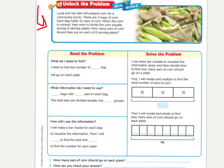It says, Lucy and her dad will prepare corn for a community picnic. There are three bags of corn. Each bag holds 32 ears of corn. When the corn is cooked, they want to divide the corn equally among eight serving plates. How many ears of corn should they put on each of the eight serving plates?